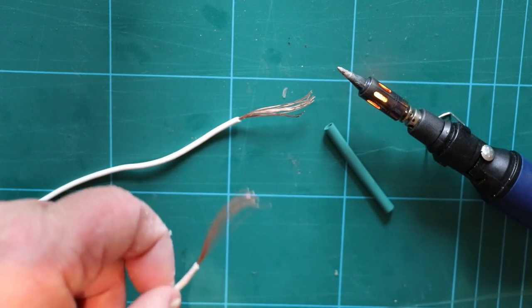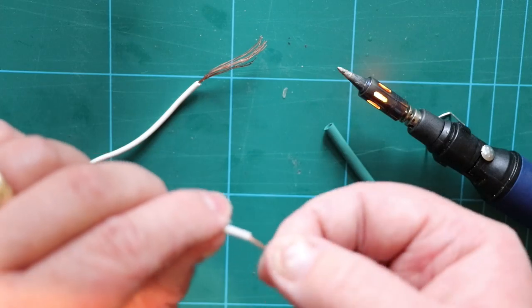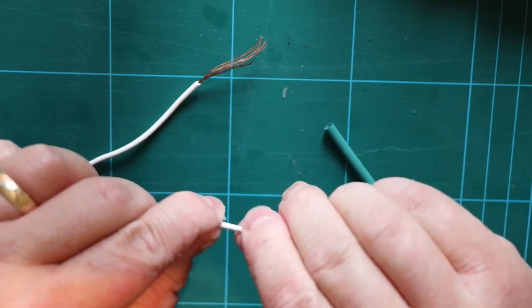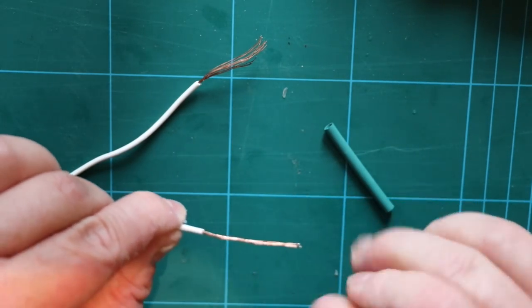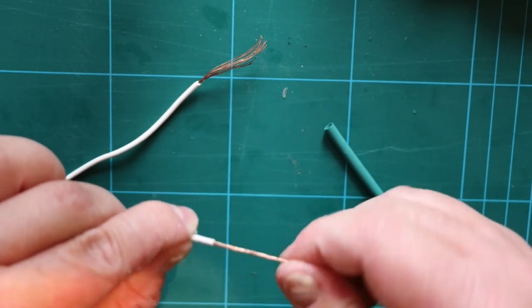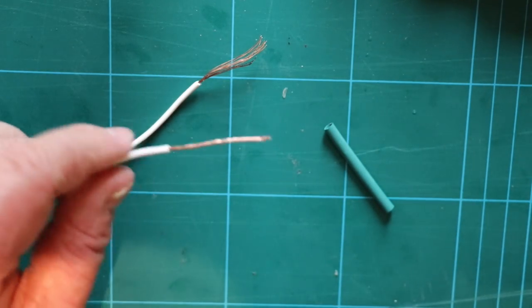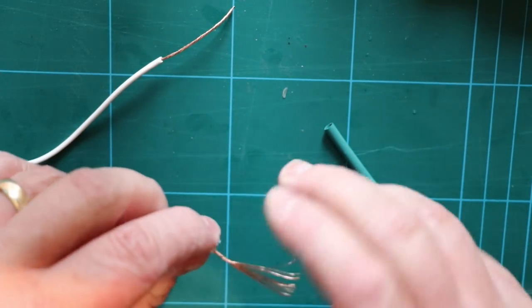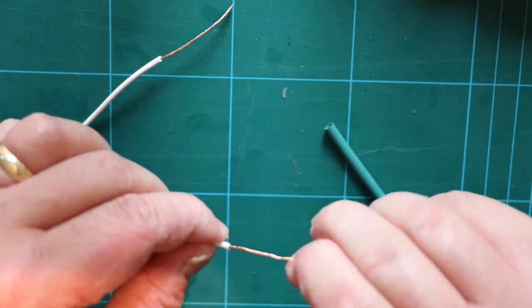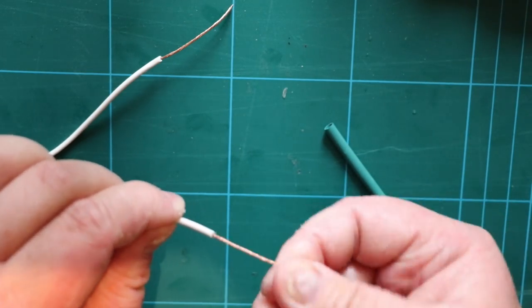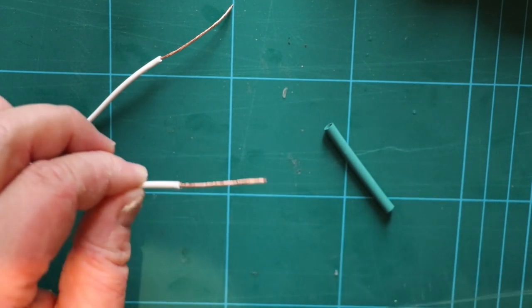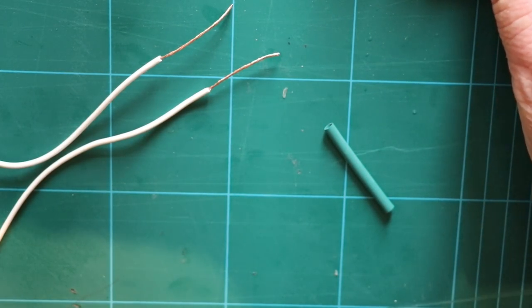So again what we're going to do is we're going to twist the cables again. Again we'll make it nice and solid, we'll do that on both sides. Now believe it or not, NASA actually use this method of splicing cables together as well. And there is a full blown NASA specification on how to splice cables together. It uses this method. So if it's good enough for NASA, it's going to be good enough for my caravan I think.